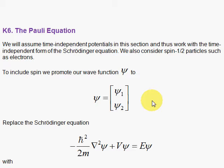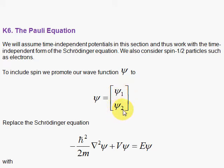The Schrödinger Equation does not include spin. But we can construct a wave function as a spinor wave function, where you have a function of x, y, z, t in general, and a function of x, y, z, t in general — an upper function and a lower function. That is a spinor wave function.